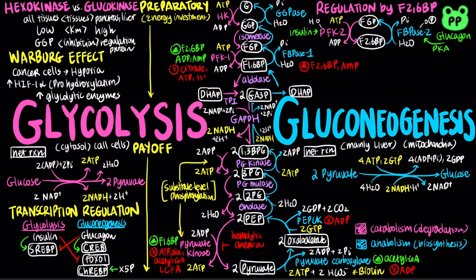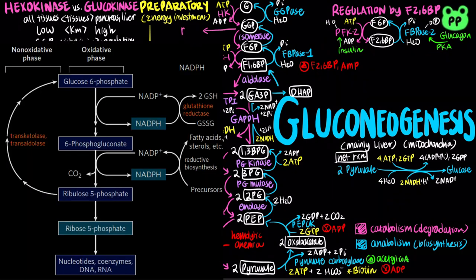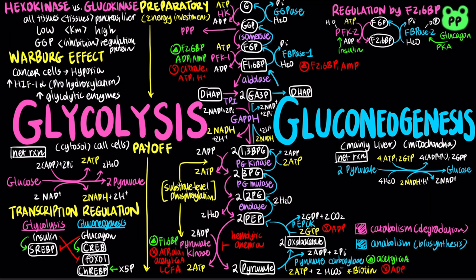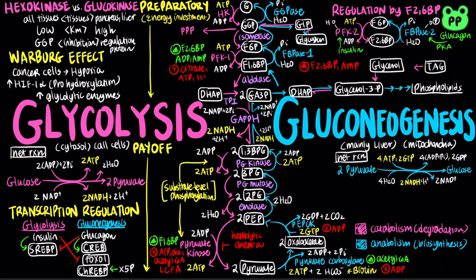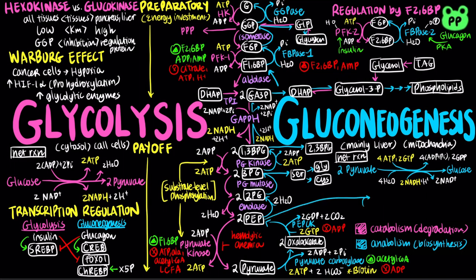Finally, there are alternative pathways for some intermediates of glycolysis and gluconeogenesis. Glucose-6-phosphate can enter the pentose phosphate pathway, generating NADPH important for reductive biosynthesis, or it can be converted to glucose-1-phosphate and stored as glycogen when excess glucose is available. Dihydroxyacetone phosphate can interconvert with glycerol-3-phosphate, which is how glycerol broken down from fatty acids enters glycolysis, as well as how many phospholipids are synthesized. 1,3-bisphosphoglycerate can be converted to 2,3-bisphosphoglycerate, an allosteric inhibitor of hemoglobin. Lastly, 3-phosphoglycerate is involved in the synthesis of serine, glycine, and cysteine, and phosphoenolpyruvate is involved in the synthesis of aromatic amino acids phenylalanine, tyrosine, and tryptophan.